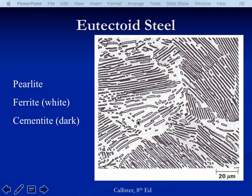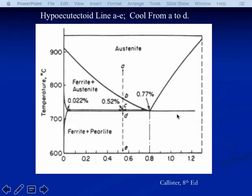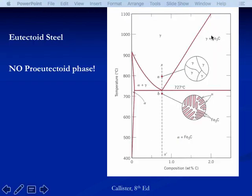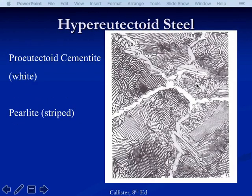What happens if we have a hyper-eutectoid steel — carbon content higher than 0.77%? Going back to the phase diagram, cooling down puts us in the austenite plus Fe3C region. So the pro-eutectoid phase in a hyper-eutectoid steel is cementite, forming along grain boundaries just like ferrite does in the hypo case. The only reason we know it's cementite is because we know it's a hyper-eutectoid steel. That is the pro-eutectoid cementite; the cementite in the grains is eutectoid cementite, and all ferrite formed only at the eutectoid.